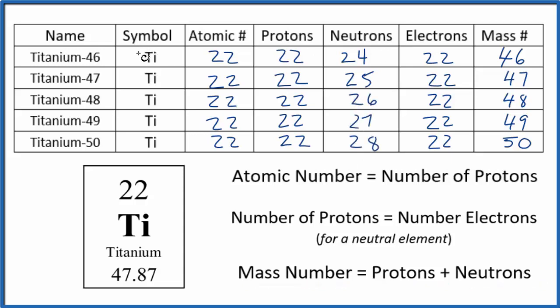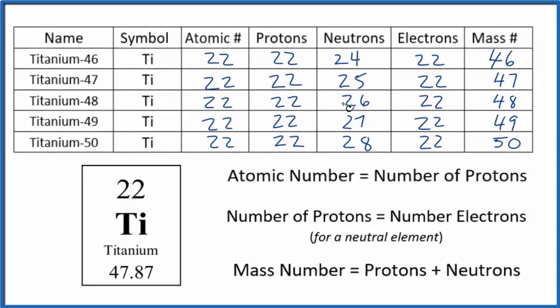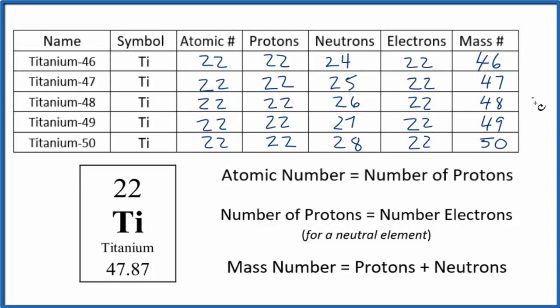When we have a sample of titanium, like a block of titanium metal, all of these isotopes, these are naturally occurring isotopes, they'll be present. Most of them, though, are going to be titanium 48. Something like 73% of the atoms in that block of titanium will have 26 neutrons. And then the rest will be a mix of these other isotopes.